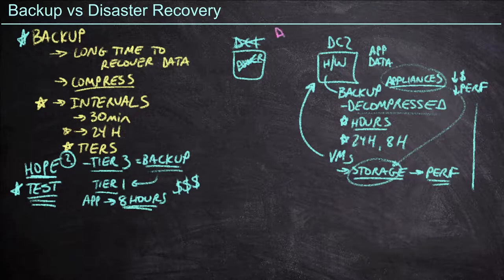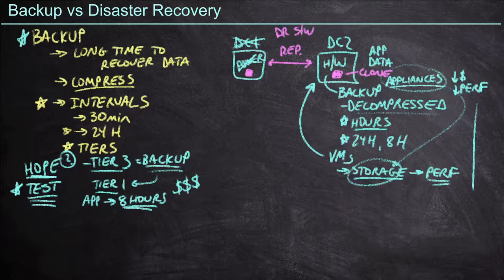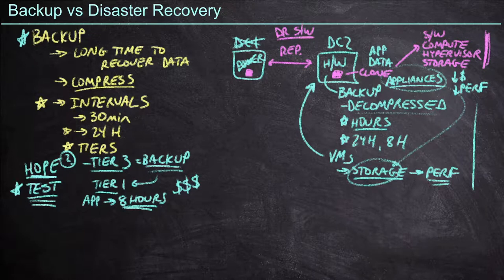That's backups. When we talk about disaster recovery software, we talked about replication and using that replication technology to speed up the process of failover. If we have a living version of a virtual machine in data center two that is truly a clone of the data in data center one, then bringing it back online is very simple. However, running this clone implies we need the software in place, the compute to run the virtual machine — which means hypervisor licensing — and good storage performance requiring a storage array. The infrastructure to support DR software and replication is far more significant than what's needed for tier three backup-type recoveries.